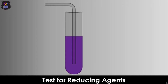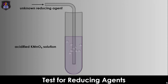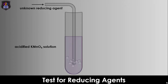So, if we bubble an unknown gas or add an unknown solution to a purple solution of acidified potassium permanganate-7 and observe it turn colorless, then the unknown substance must be a reducing agent. The reason is that only a reducing agent can reduce the purple permanganate-7 ions in the solution to colorless manganese-2 ions, as shown in the first reduction half equation.